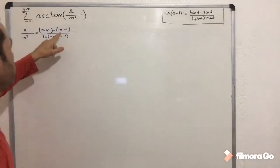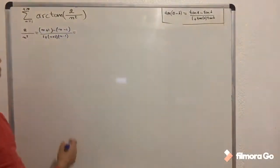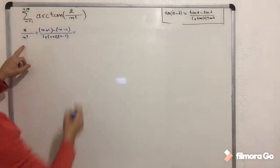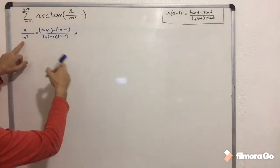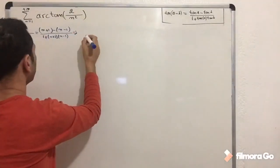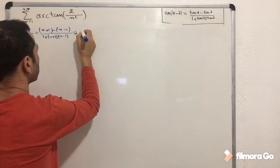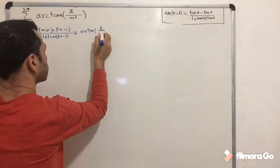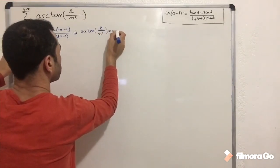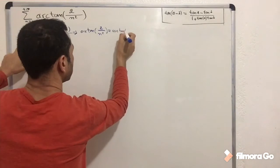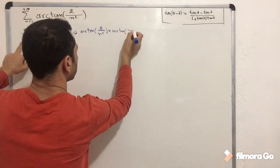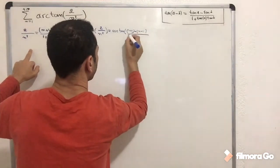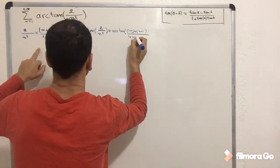We replace tan a by n+1 and tan b by n−1. Then we apply arctangent on both sides. The equation becomes: arctan(2/n²) = arctan((n+1 − (n−1)) / (1 + (n+1)(n−1))).